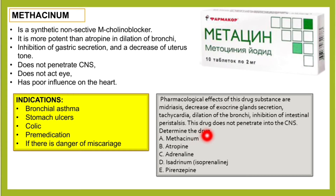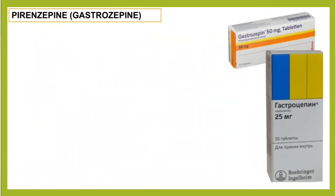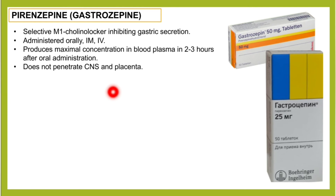Pyrenzepine is also known as gastrozepine — which gives a hint about its use. It is a selective M1 cholinoblocker that inhibits gastric secretion. It is administered orally, intramuscularly, or intravenously.